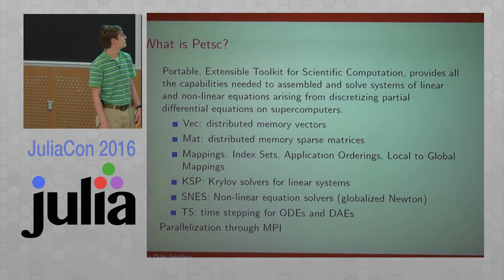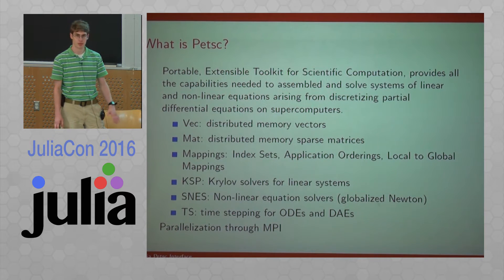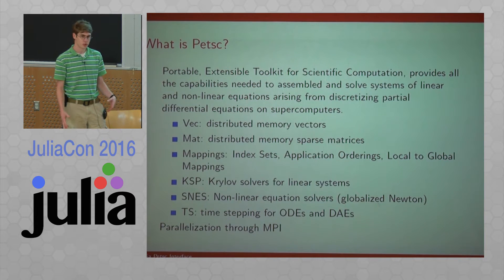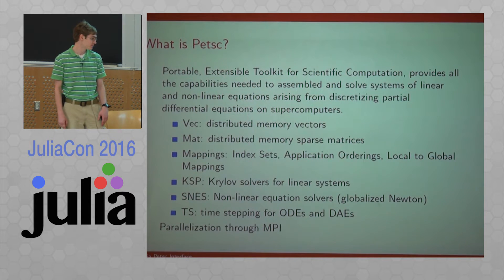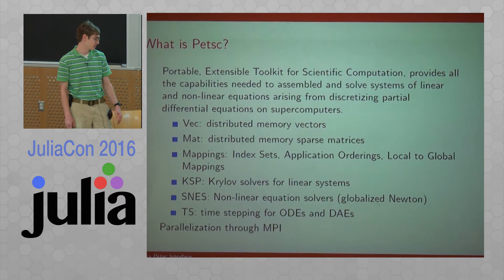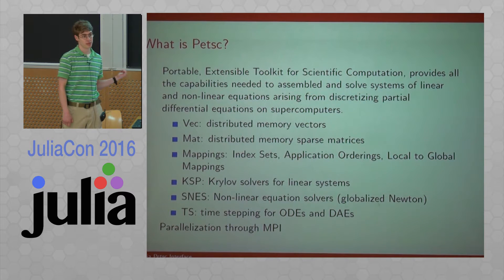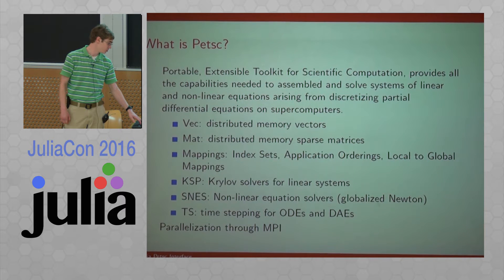It has six main components: distributed memory vectors and matrices — primarily sparse matrices, though there's support for dense matrices as well — mappings and orderings of various kinds, all the bookkeeping stuff that makes it easy to assemble these very large systems. On top of those, it builds KSP, the Krylov solvers for solving linear systems. It has the scalable nonlinear equation solvers, SNES, and there's a time-stepping interface as well. All of this is built on top of MPI, so MPI.jl is a dependency of PETSc.jl because we need to interact with MPI communicators.